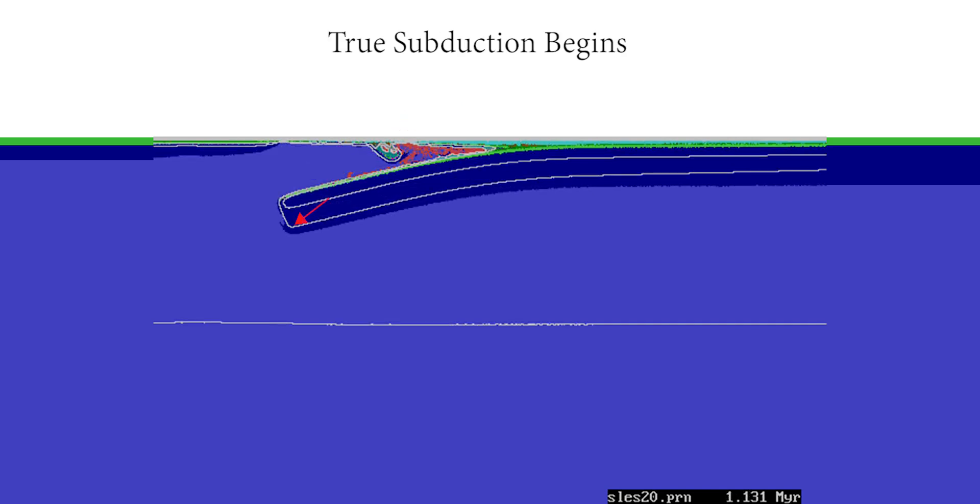As the slab continues to sink, it encounters increasing resistance from the underlying mantle and begins to move down dip. This is where true subduction begins.